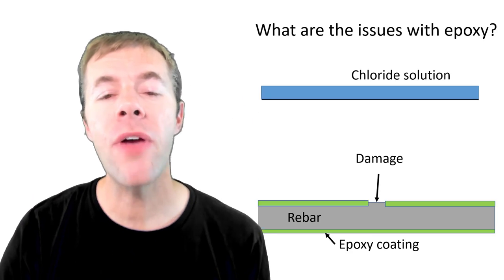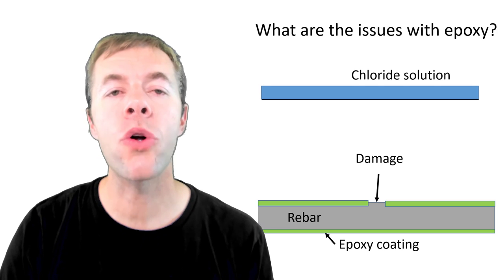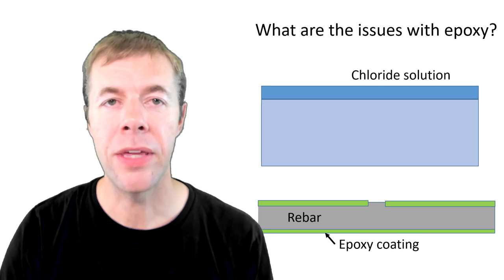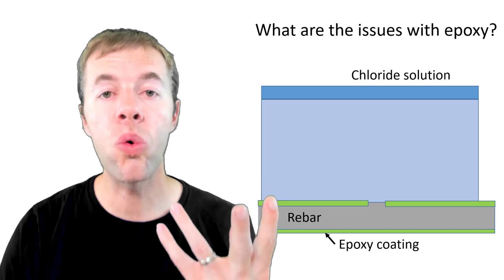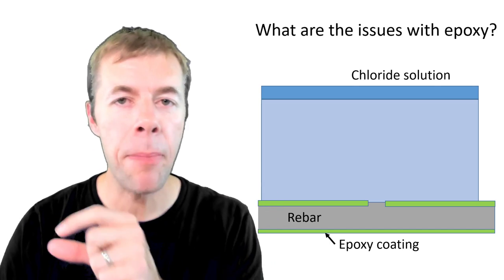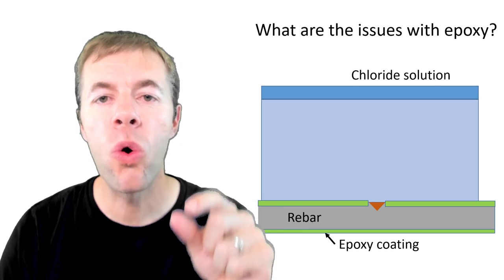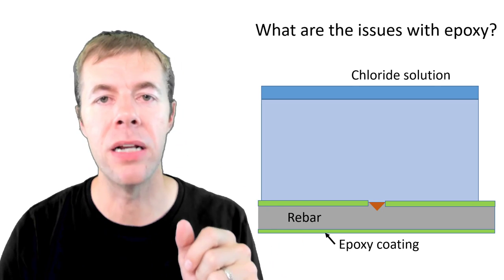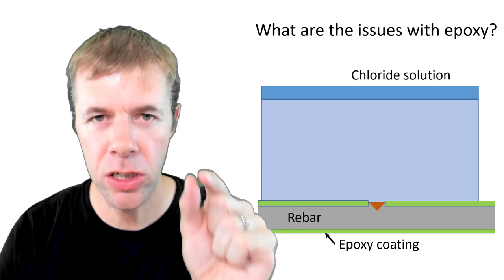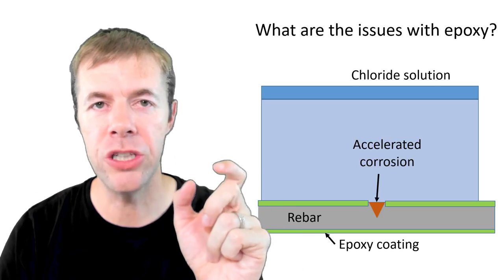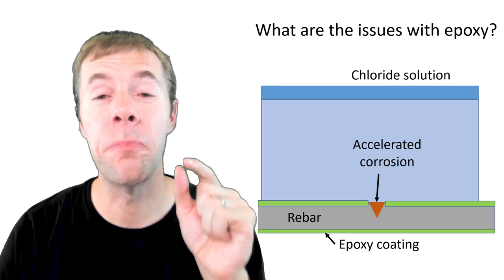So what are the issues with this? Well, there's two big ones. Let's talk about the first one. If you have a damaged spot, well as the chlorides come in and they get closer and closer and they start corrosion, corrosion doesn't happen uniformly over the bar. Corrosion is going to happen in one spot. All of that corrosion instead of happening at the surface is going to be concentrated in one region, and this is called pitting corrosion.